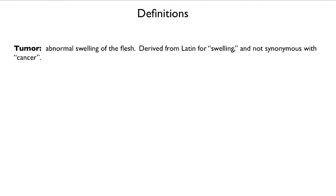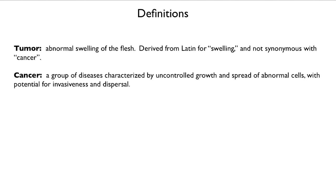First a few definitions. A tumor is an abnormal swelling of the flesh. Not all tumors are cancers. It's derived from Latin for swelling, and it is not identical with what doctors refer to as cancer. A cancer is actually a group of diseases characterized by the uncontrolled growth and spread of abnormal cells that can invade and disperse.